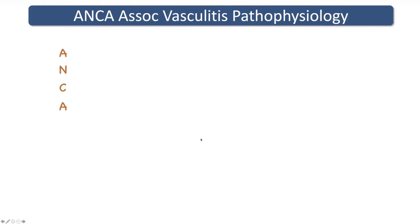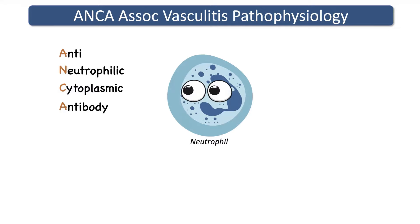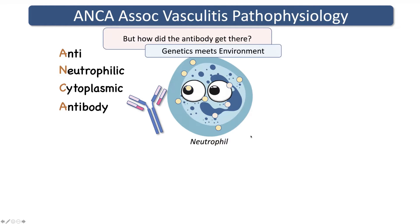In terms of ANCA pathophysiology, ANCA stands for anti-neutrophilic cytoplasmic antibody. The key is in the name — we have an antibody that's directed against something inside the neutrophil. How do we develop an antibody to something inside the neutrophil? Like many autoimmune conditions, it seems to be genetic predisposition in any one person meeting something external — a stimulus in the environment, such as an environmental exposure or infection.